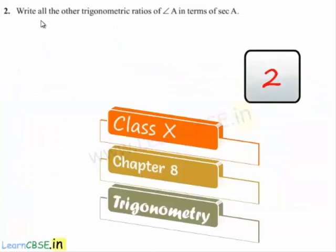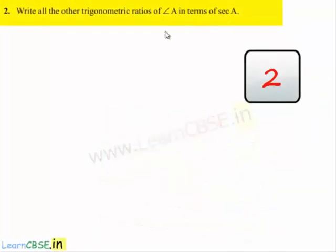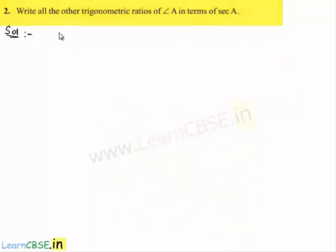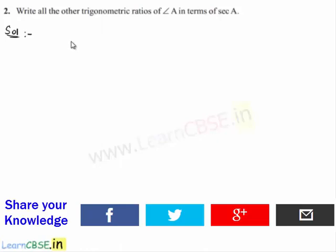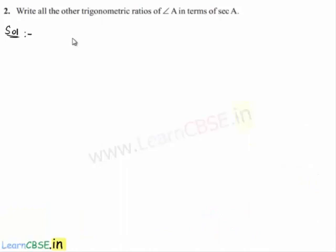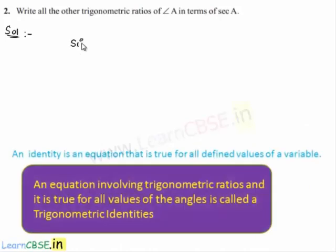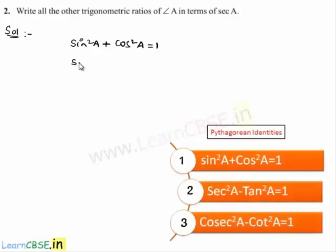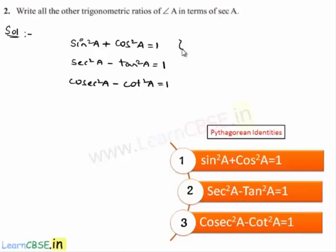Moving on to the second sum: write all other trigonometric ratios of a in terms of sec a. We need to express sin a, cos a, tan a, cot a, sec a, and cosec a in terms of sec a. To do so, we use the following identities: sin²a + cos²a = 1; sec²a - tan²a = 1; and cosec²a - cot²a = 1.